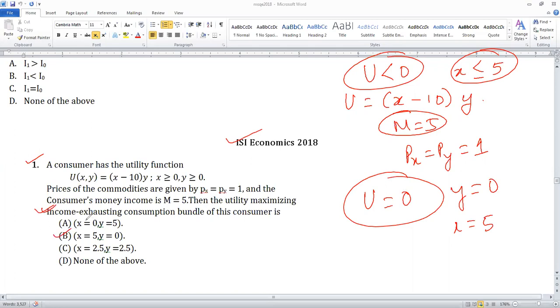It should be 5 comma 0, x is equal to 5, y is equal to 0. If this wouldn't have been mentioned, then the answer would be none of the above, x is equal to 0, y is equal to 0.